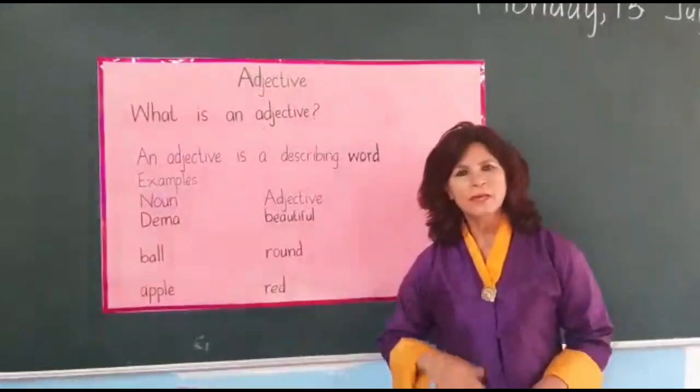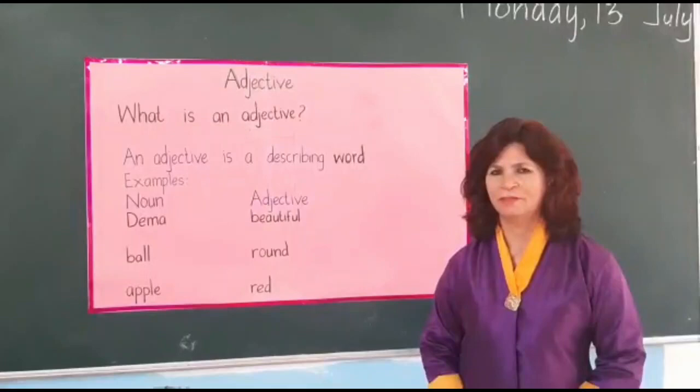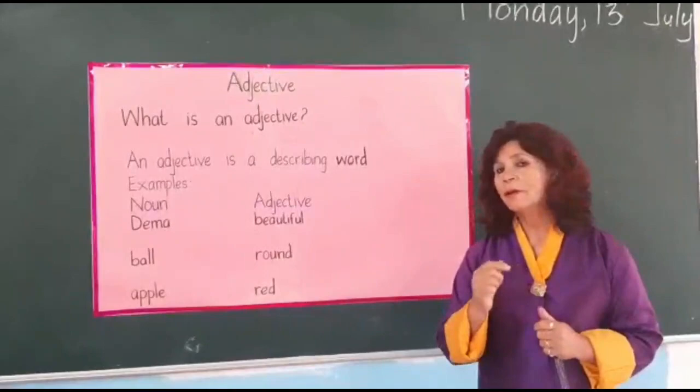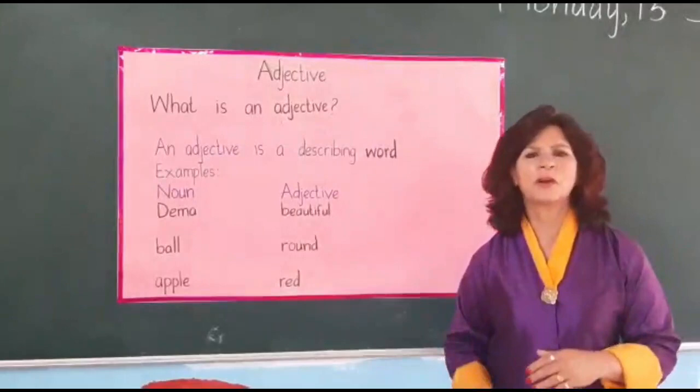Now let me give another example again. Apple. Do you know what an apple is? What's the color of an apple? It's red. So we are describing an apple. Apple — red. An apple is red. Did you get it now? Apple is a noun. Red is an adjective. We are just describing. So, an adjective is a describing word.